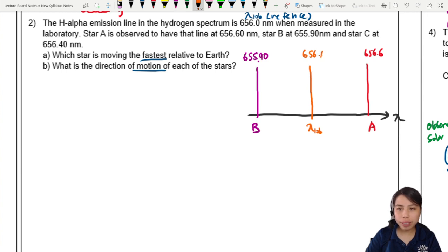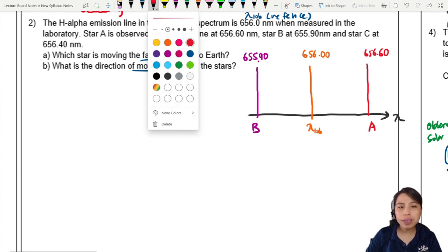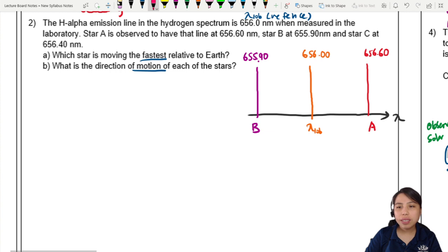I'm going to add the decimals so we can make it standardized. Star C is 656.4, a little bit not as far, but okay. Let's make it pink color. Let's put it here, 656.4. This is star C.